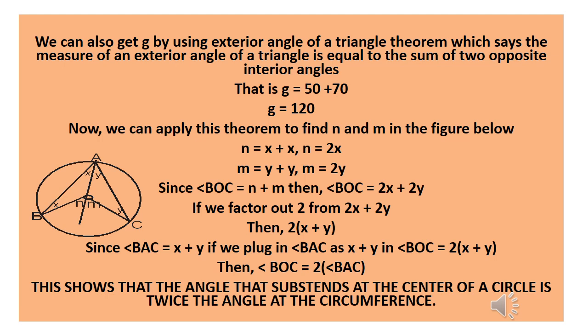From the previous diagram, n is the exterior angle of isosceles triangle AOB, and n equals x plus x — because x and x are the two opposite interior angles — so n equals 2x. For triangle AOC, the exterior angle is m, and m equals y plus y, because y and y are the two opposite interior angles of triangle AOC, so m equals 2y.